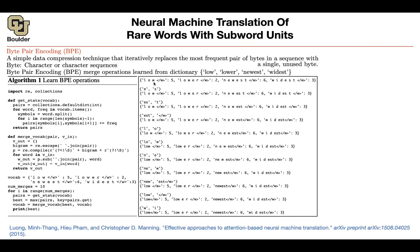Then let's count ES. There's no ES in 'low' or 'lower', but there is ES in 'newest' — it appears six times — and another ES in 'widest', appearing three times. Six plus three gives you nine. Nine is bigger than seven, so ES is more frequent than LO, and it's actually the most frequent pair of characters in your corpus.